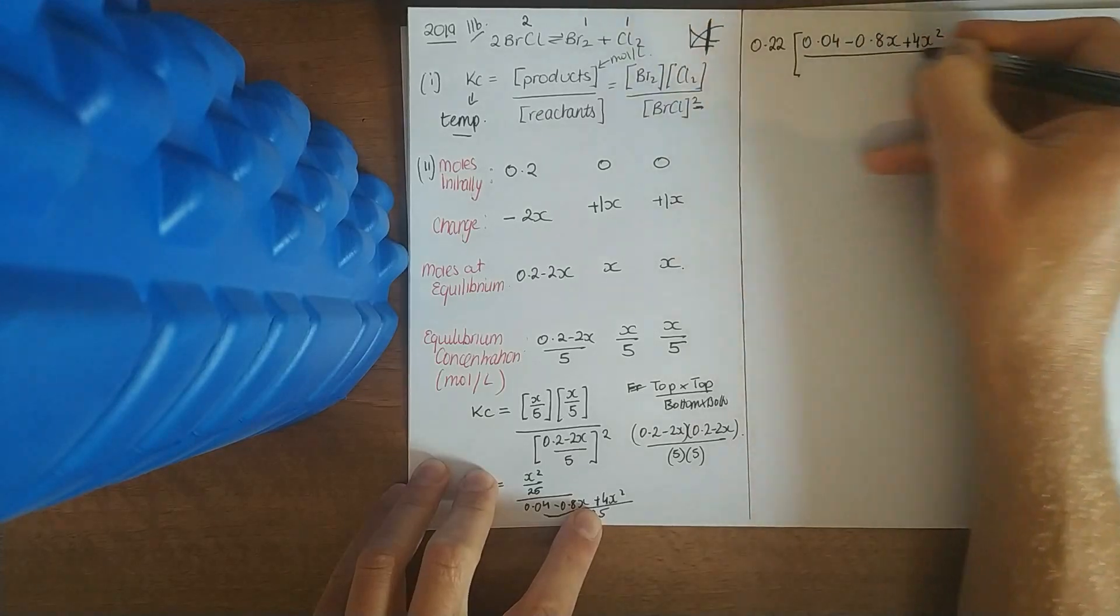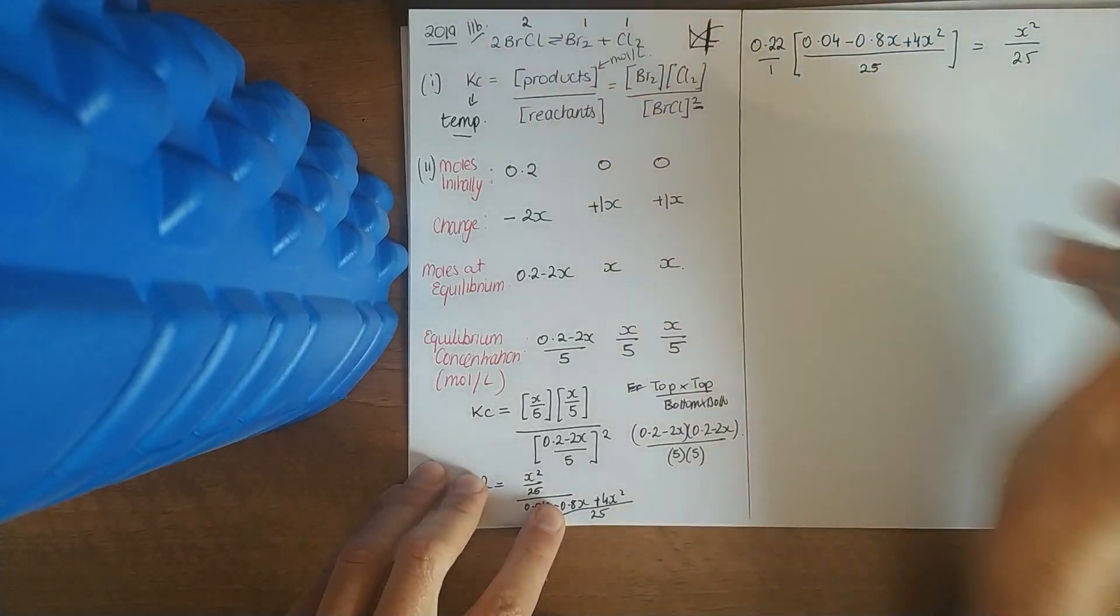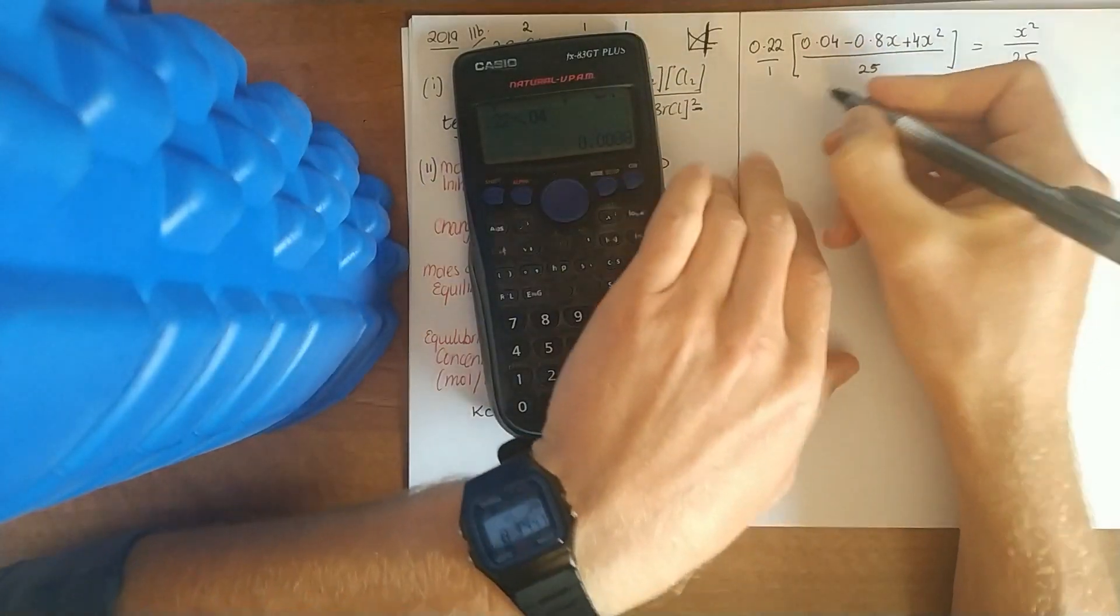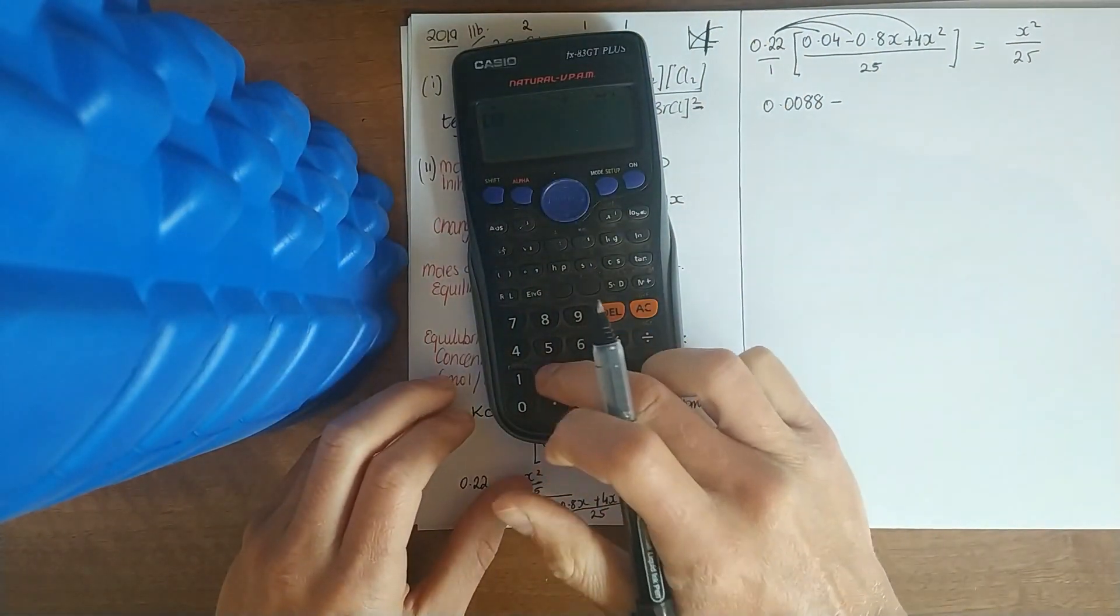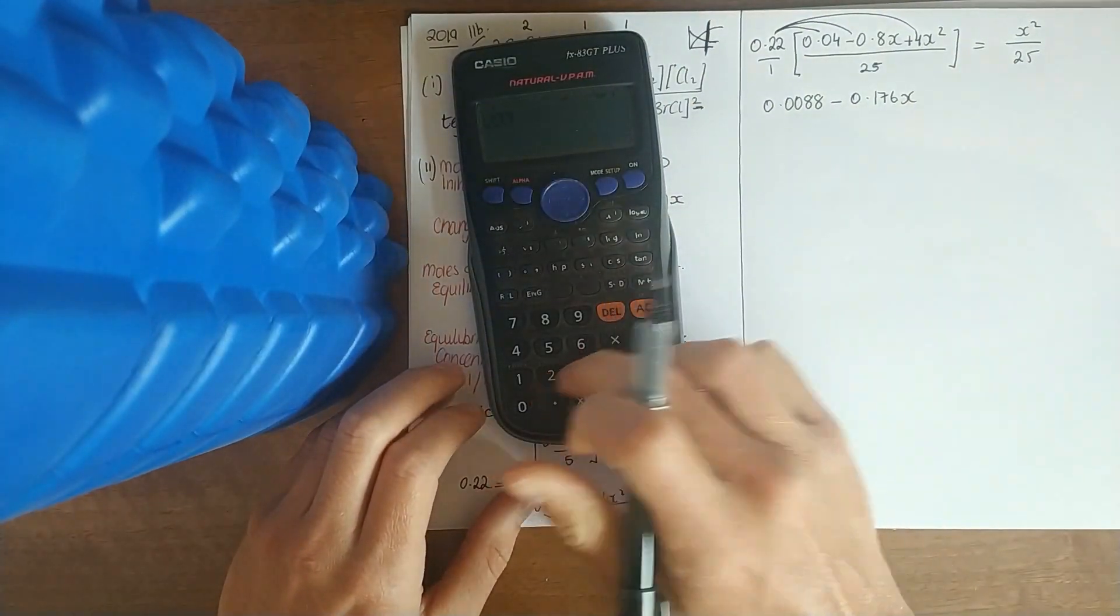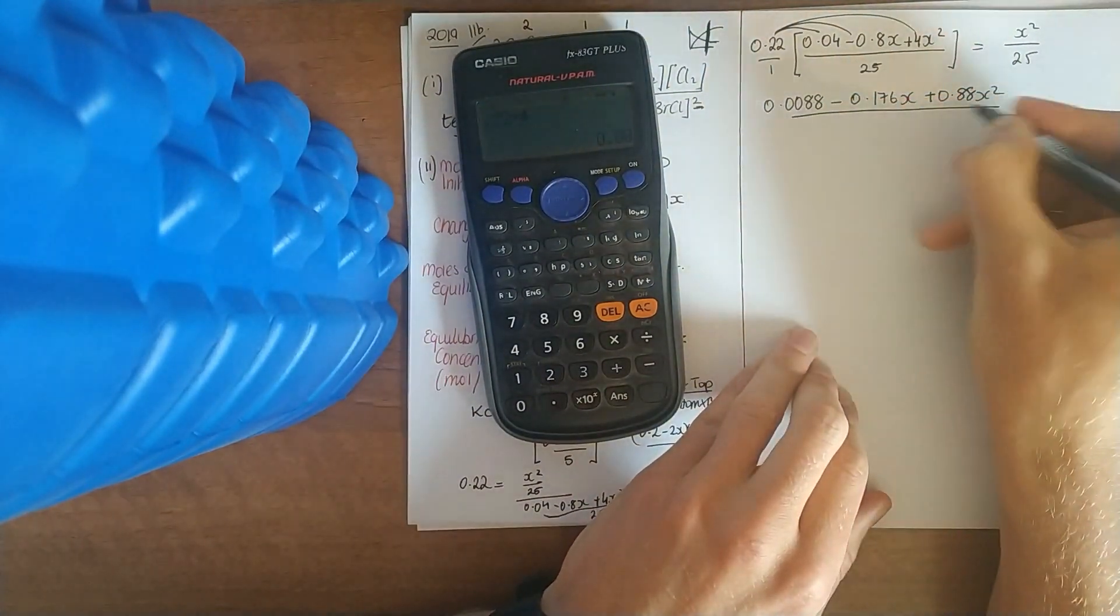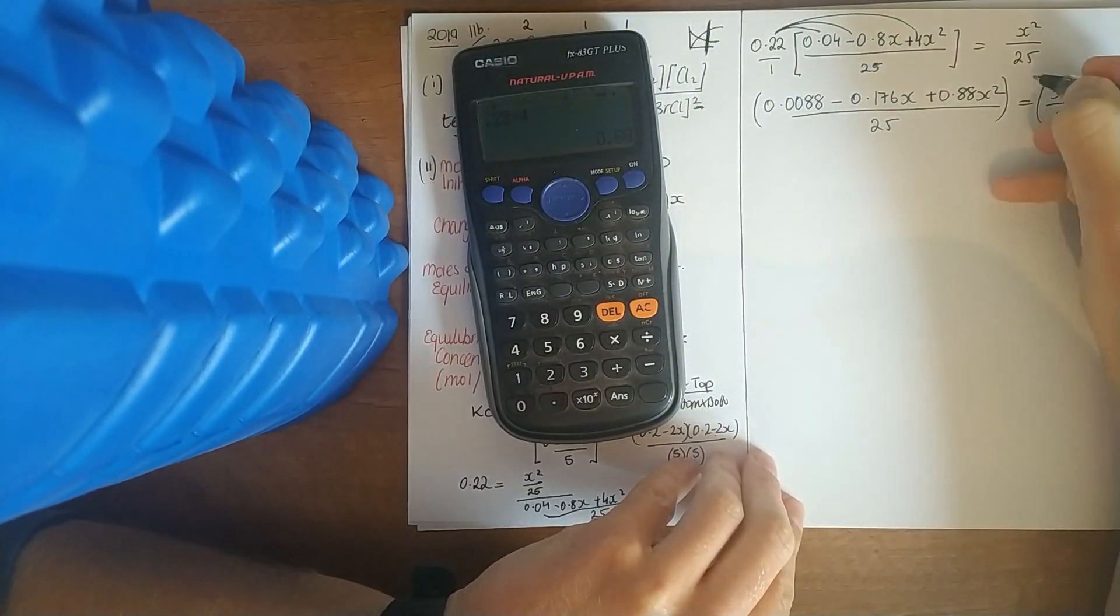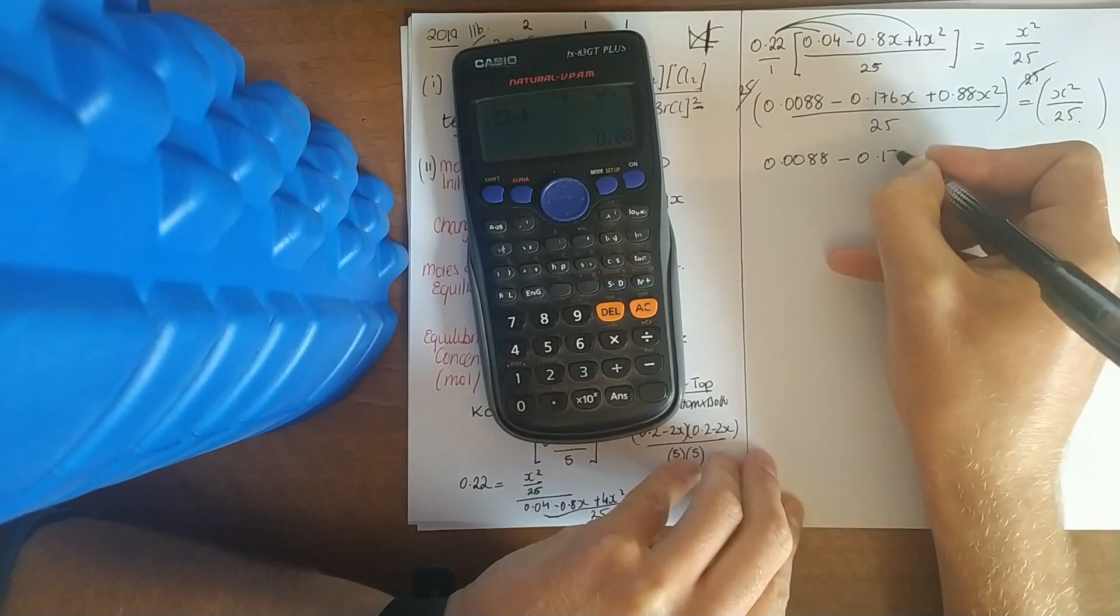So here you have 0.22 times 0.04 minus 0.8x plus 4x squared over 25 equals x squared over 25. Multiply top by top, bottom by bottom. So 0.22 by 0.04 is 0.0088, minus 0.176x. Now we can get rid of the fraction. There's an equal sign, you're multiplying both sides by the common denominator which is 25. You're left with 0.0088 minus 0.176x.